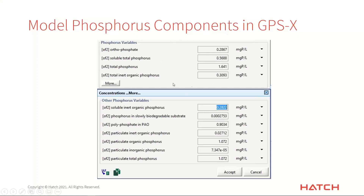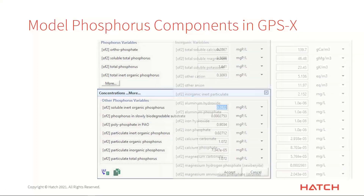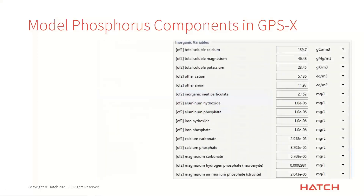These phosphorus numbers are all there, and you can drag them onto graphs and do whatever you like. If you click on the More button, you'll get even more variables — polyphosphates and various other sums, such as particulate total phosphorus. So any of that stuff is available for you to dig into.